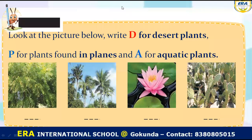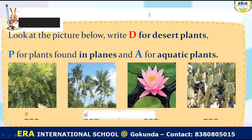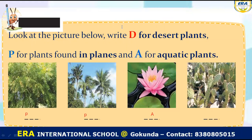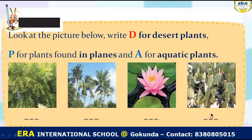Now we have to do an activity where we select the appropriate word for each plant. For desert plant, we write D. For aquatic plant, we write A. For plant in plains, we write P. So this plant is in the plain — we write P. Lotus is an aquatic plant — we write A. And cactus is a desert plant — we write D. In this way, we can understand that plains plants, desert plants, and aquatic plants are all different. Use this information to write in your textbook.